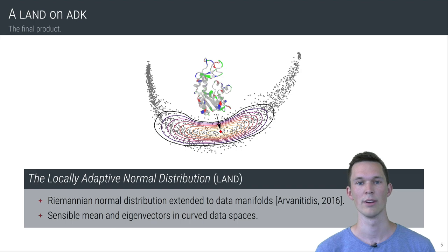In this framework, a Gaussian on the manifold can be learned from the data. This is called a locally adaptive normal distribution. As you can see in the figure, it provides us with sensible mean and eigendirections.